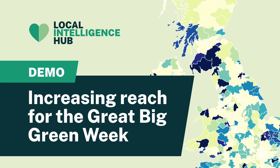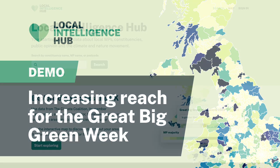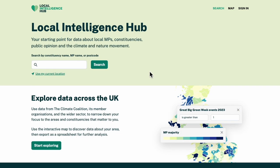The Great Big Green Week is the UK's biggest celebration of community action on tackling climate change. Let's imagine I work at the Climate Coalition and I've been tasked with identifying constituencies that could benefit from more support with hosting Great Big Green Week events this year. How could I use the Local Intelligence Hub to do that?